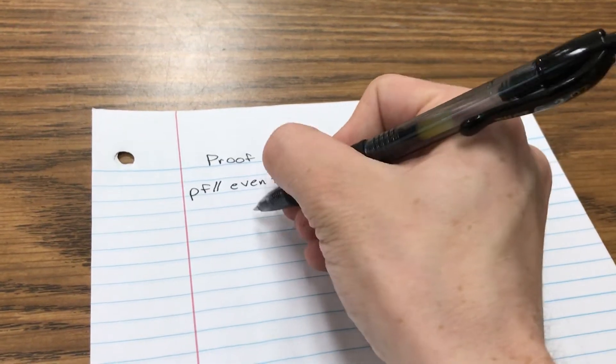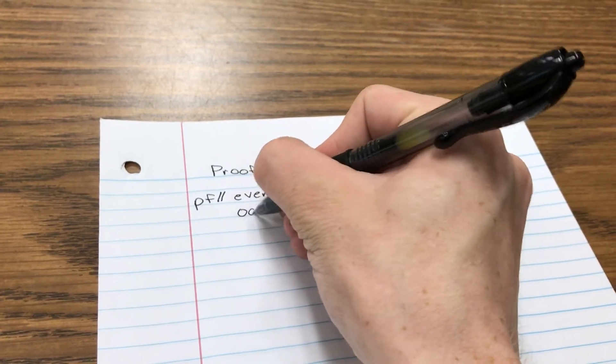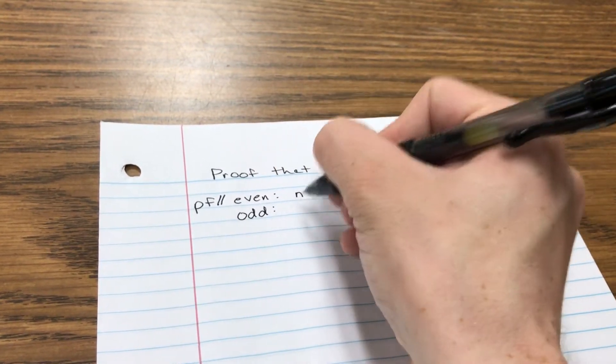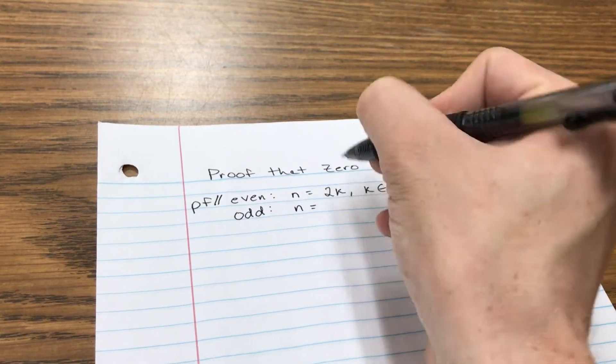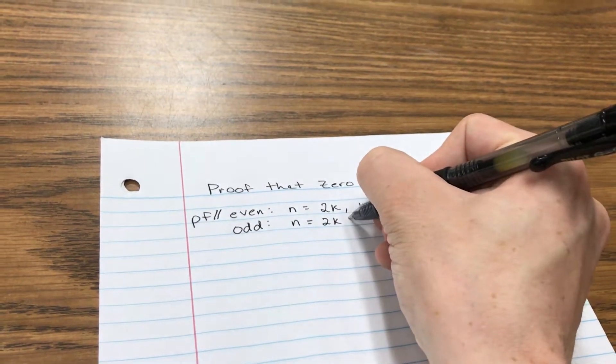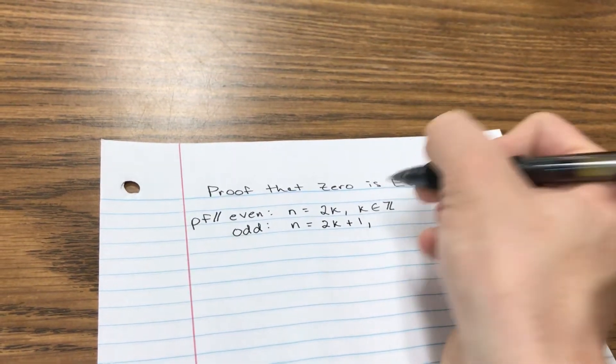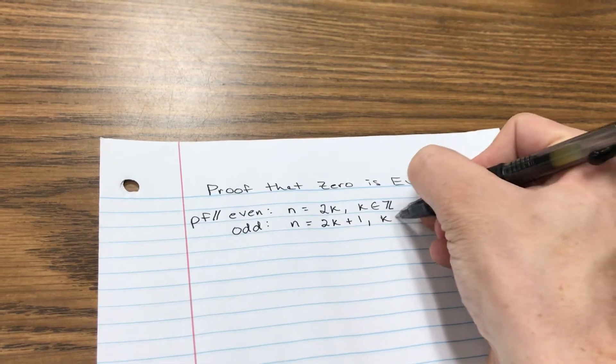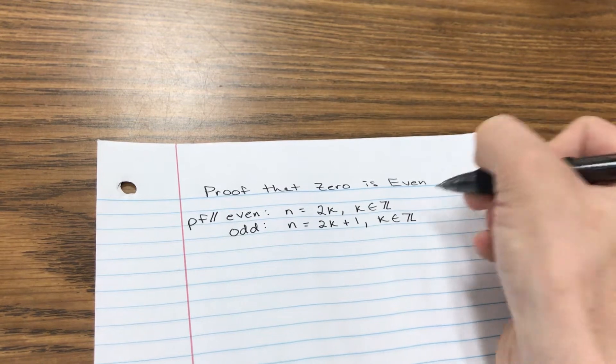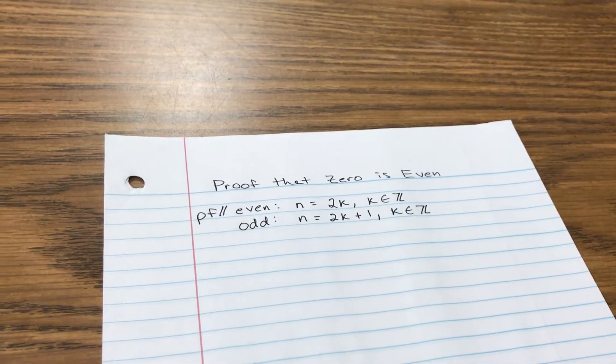So if something is odd, let's say n is odd, then it can always be written as 2 times k plus 1. That's the difference, where k is some kind of integer.